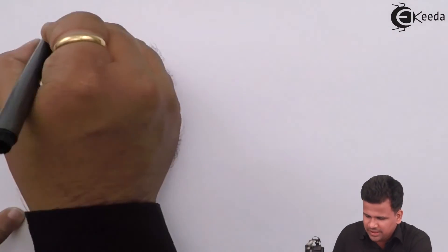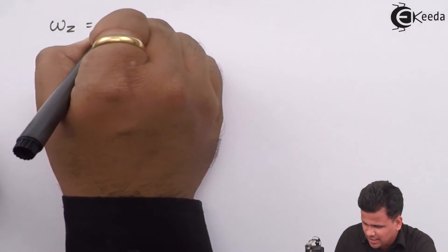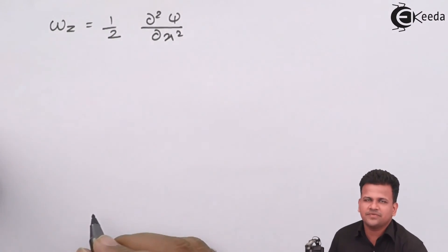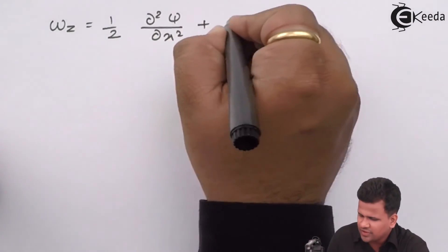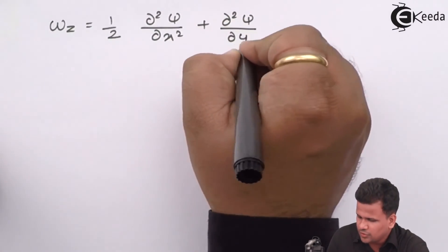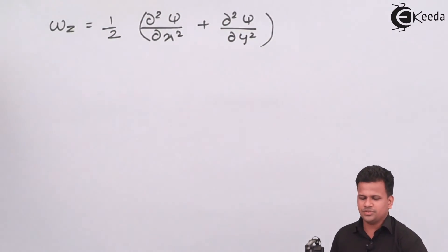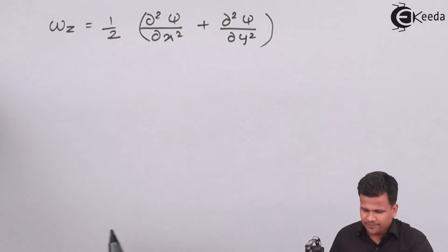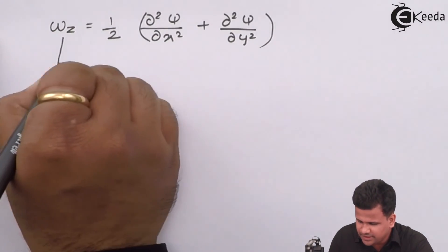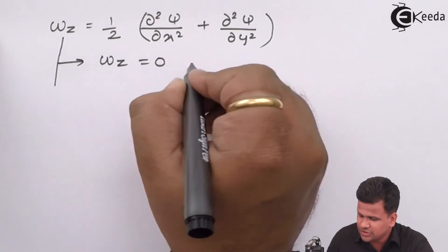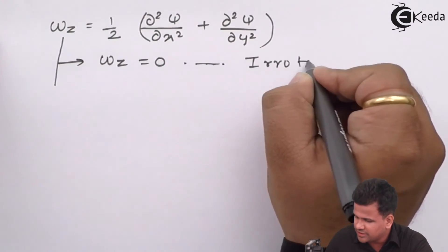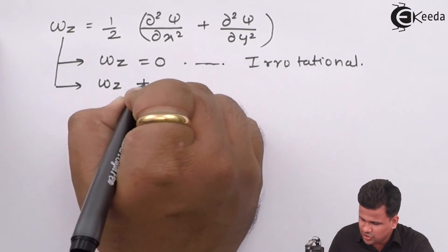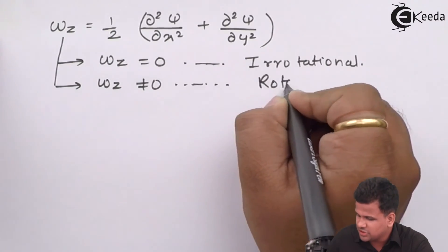Substituting these values, omega_z equals half of (dou squared psi by dou x squared plus dou squared psi by dou y squared). This is the equation to determine whether the flow is rotational or irrotational. If omega_z equals zero, the flow is irrotational; if omega_z is not equal to zero, the flow is rotational.